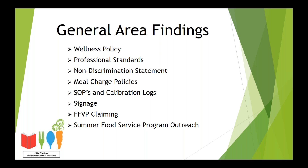General area findings is the last category we are going to go through. The general area of the review covers a wide range of topics, which is why we actually find a lot more of our review findings here. This can include civil rights, on-site monitoring, wellness policy, smart snacks, professional standards, food safety, Buy American, record keeping and outreach. The specific findings we are going to discuss today are wellness policy, professional standards, non-discrimination statement, meal charge policies, standard operating procedures and calibration logs, signage, FFVP claiming, and summer food service program outreach.